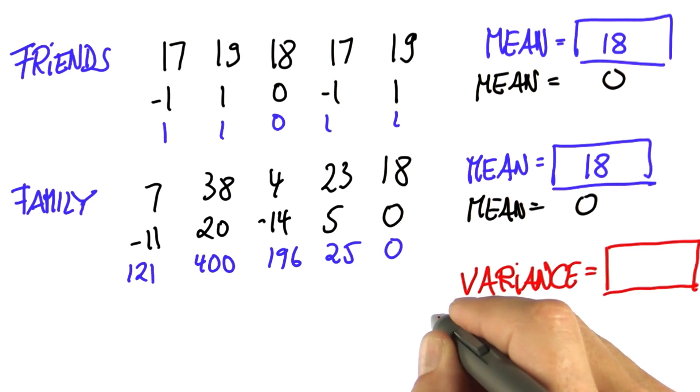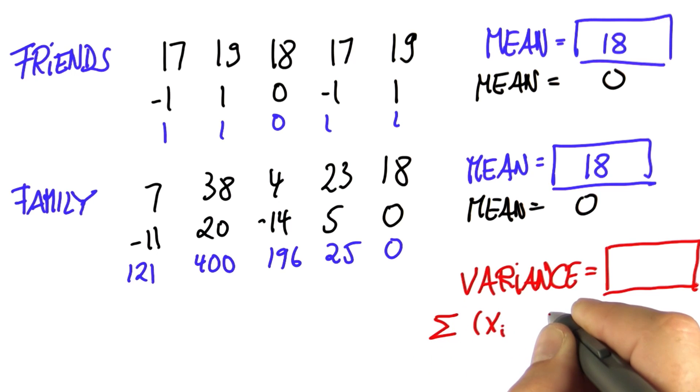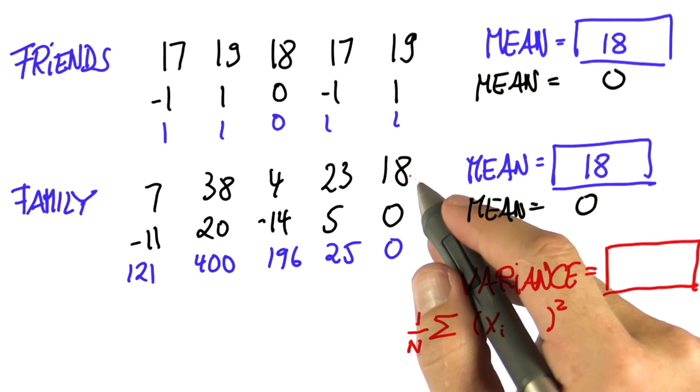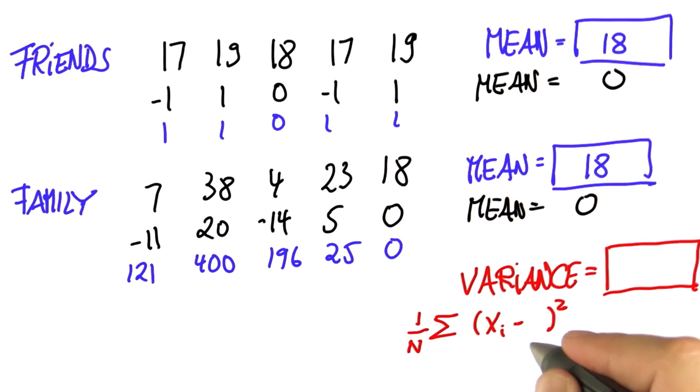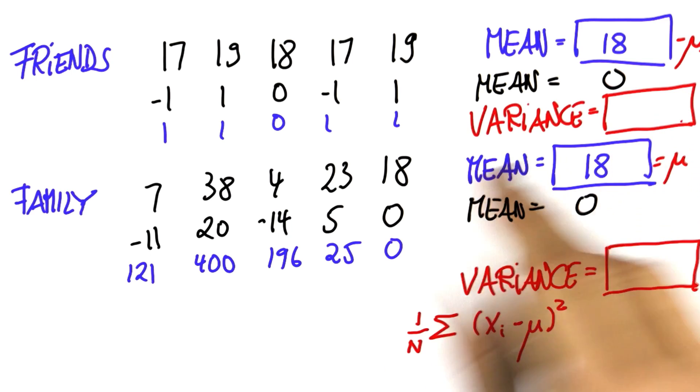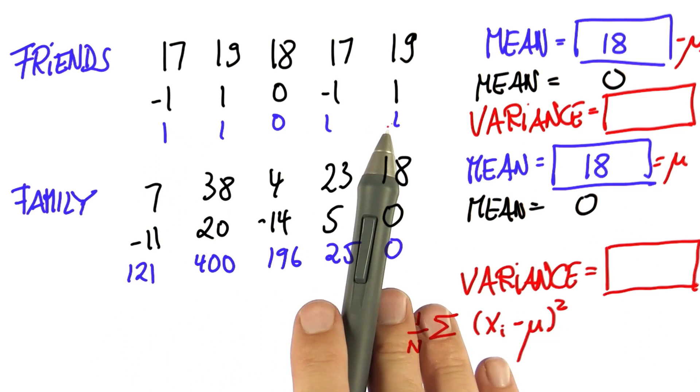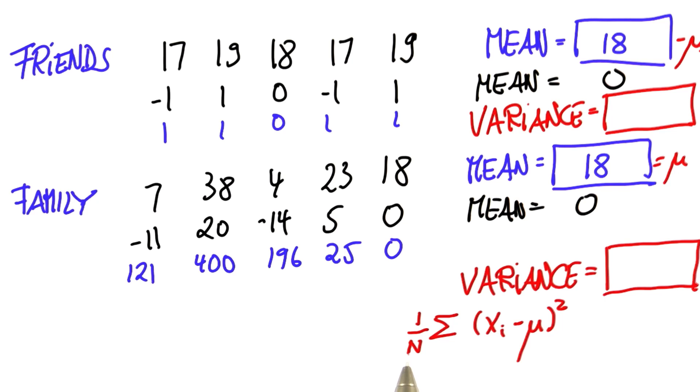So for the variance, we sum the squares of all these numbers and normalize that. But the squares are not taken of the original data. They are taken of the original data minus the mean, which I'm going to write by this Greek letter over here, mu. So do me a favor and try to compute the variance for the first sequence, which you obtain by adding those squares over here and dividing them by 5.